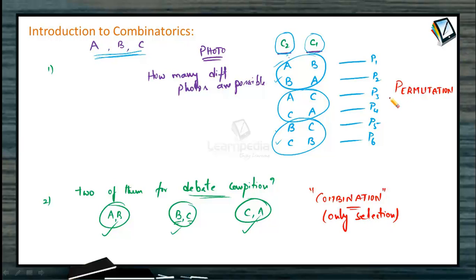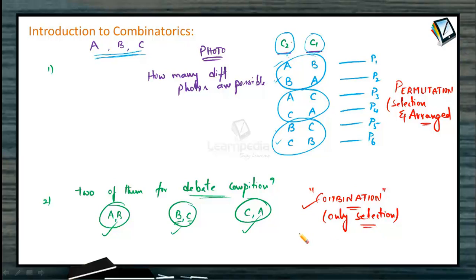In the debate competition example, there is no internal positioning importance — we are only selecting, so this is a combination. In the photograph example, we selected and then arranged the students in chairs, making it a permutation. Such only-selection procedures are combinations, while selection combined with arrangement is a permutation. The topic combining both is called combinatorics, and before proceeding further, we will learn the important notation of factorial.